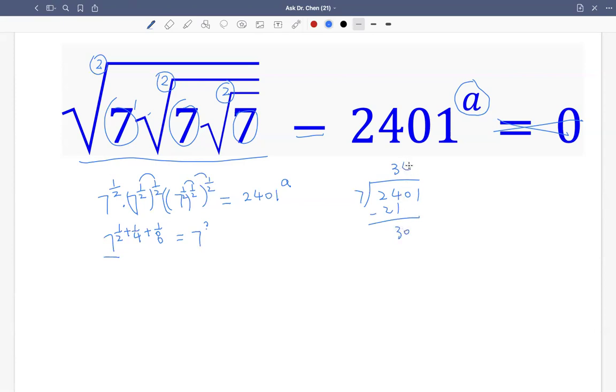That's 4, 4 times 7 is 28, subtracting we get 2, bring down 1, so 21 - that's 3. So we get 343. 7 times 343, and 343 can be divided by 7 again.